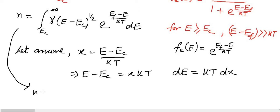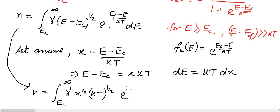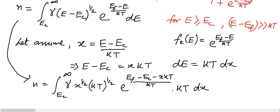And dE equals kT·dx. So we can write N equals the integral, and we also change the limits: when E equals E_C then x equals 0, and when E equals infinity then x equals infinity, so the limit becomes 0 to infinity. We now have gamma times x^(1/2) times (kT)^(1/2) times e^((E_F minus E_C minus x·kT) / kT) times kT·dx.